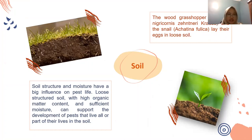Soil. Soil structure and moisture have a big influence on pests' lives. Loose-structure soil with high organic matter content and sufficient moisture can support the development of pests that live all or part of their life cycle in the soil. The wood grasshopper Valanga nigricornis and the snail Achatina fulica lay their eggs in low soil.